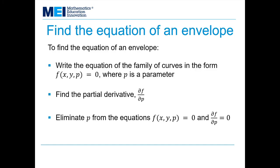So let's summarize that then. To find the equation of an envelope, first of all, I write the equation of the family of curves in the form f(x, y, p) = 0, where p is a parameter. Then I find the partial derivative ∂f/∂p with these curly D's. This is finding the derivative as if it was just a function of p with x and y treated as constants. And then I have a function f(x, y, p) = 0.